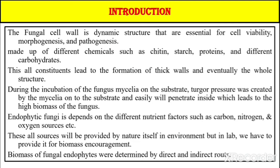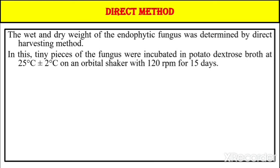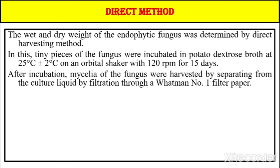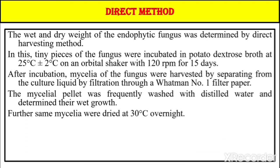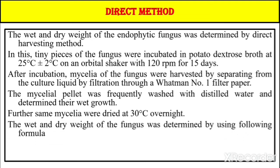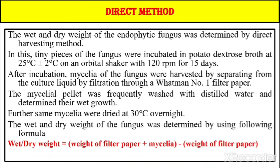Biomass of fungal endophytes can be determined by two main ways: direct and indirect methods. In the direct method, wet weight and dry weight of the endophyte fungi are determined. Tiny pieces of the fungus are incubated in potato dextrose broth at 25°C ± 2°C on an orbital shaker at 120 rpm for 15 days. After incubation, mycelia are harvested by filtration through Whatman No. 1 filter paper, washed with distilled water, then dried at 30°C overnight. Weight and dry weight are calculated using the formula: (weight of filter + mycelia) − (weight of filter paper).